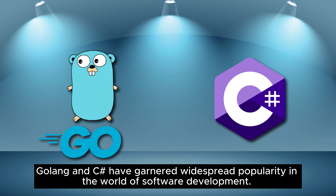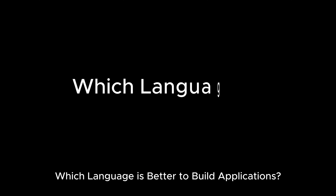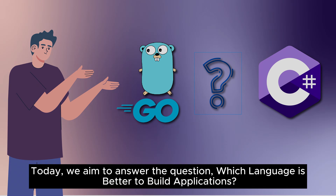Golang and C-sharp have garnered widespread popularity in the world of software development. Both languages attract a substantial audience base and serve distinct purposes. Today, we aim to answer the question: which language is better to build applications?